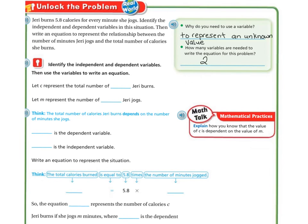So let's identify them. We're going to let C represent the total number of calories, because C for calories. And we're going to let M represent the total number of minutes. The total number of calories Jerry burns depends on the number of minutes that she jogs. So the dependent variable is going to be C, which is the calories she burns.